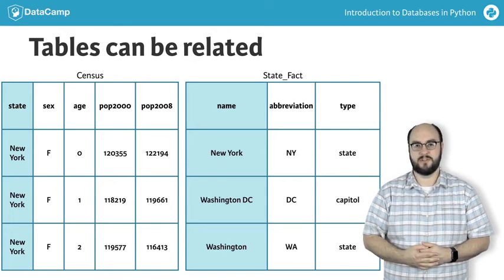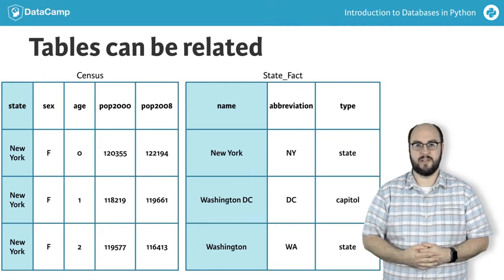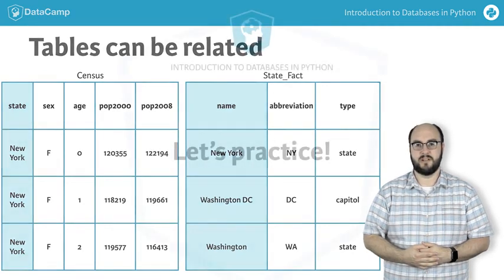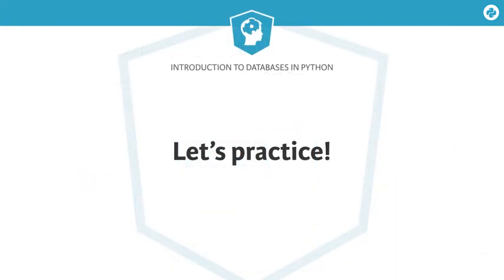The structure of tables in relational databases, along with how they can be related as outlined here, is known as the relational model. We'll soon learn how to extract information from such a database, but first, let's test your knowledge of the relational model with a multiple choice question.